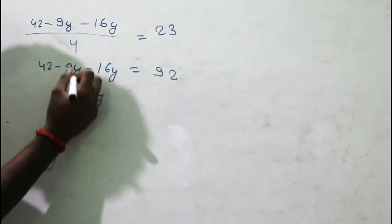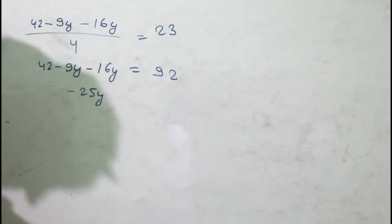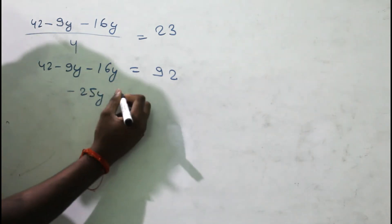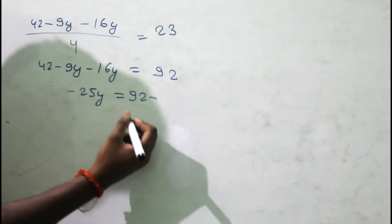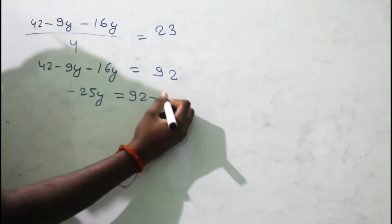We get 25y = -50, which means -25y = 42 - 92 = -50, so y = -2.